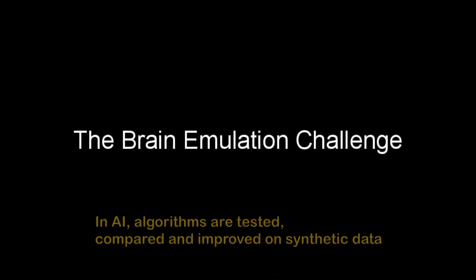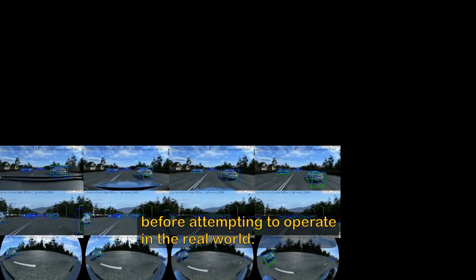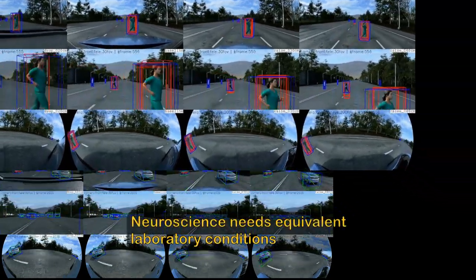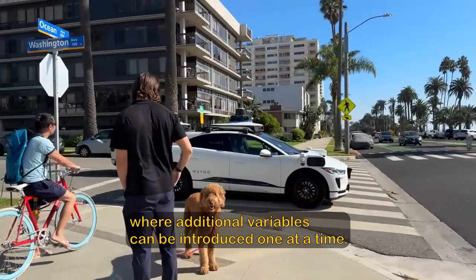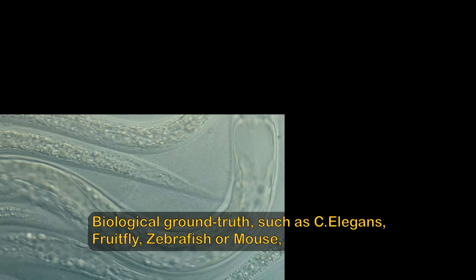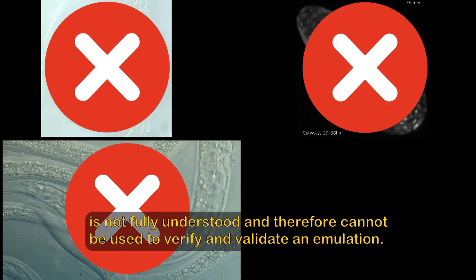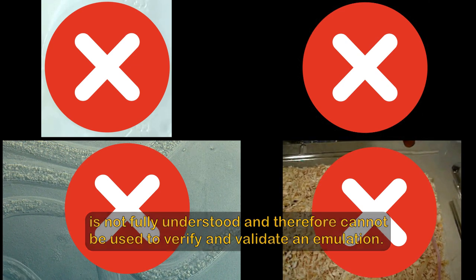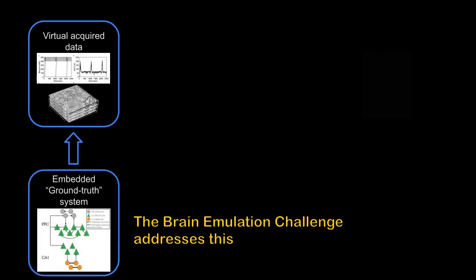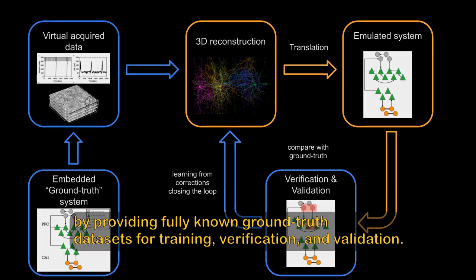The Brain Emulation Challenge. In AI, algorithms are tested, compared, and improved on synthetic data before attempting to operate in the real world. Neuroscience needs equivalent laboratory conditions where additional variables can be introduced one at a time. Biological ground-truth, such as C. elegans, fruit fly, zebrafish, or mouse, is not fully understood, and therefore cannot be used to verify and validate an emulation. The Brain Emulation Challenge addresses this by providing fully known ground-truth data sets for training, verification, and validation.